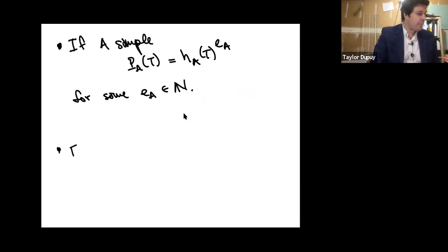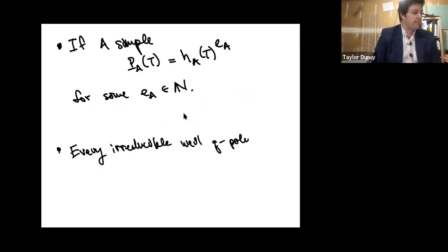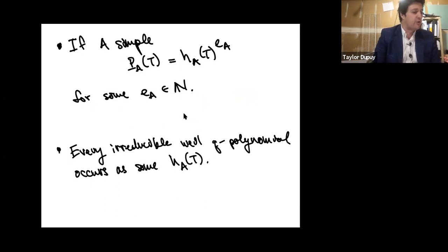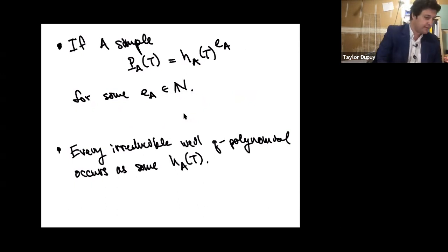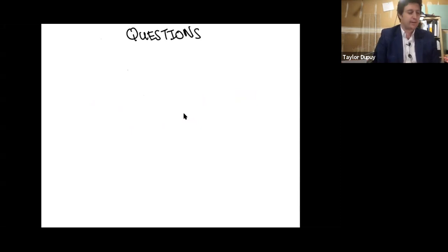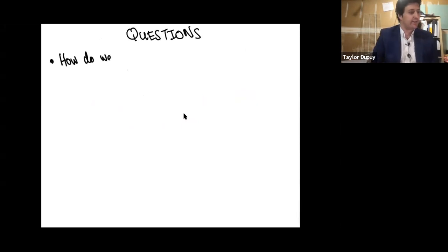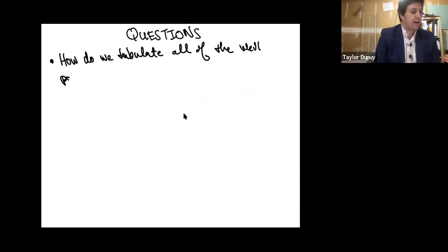The way we generate the database is we produce these h_A polynomials. The exponent e_A can be read off from the Newton polygon of h_A — specifically, if you take the least common denominator of the slopes of the Newton polygon, that's going to be e. You can start to read off lots of properties of the isogeny class of an abelian variety just from these polynomials. Conversely, every Weil Q polynomial appears as some h_A for some abelian variety.